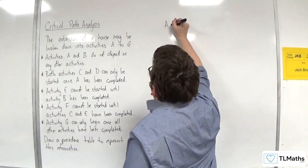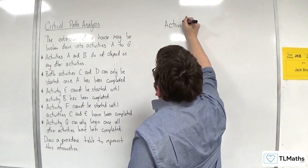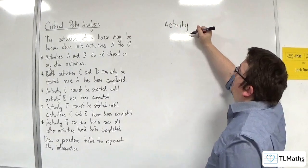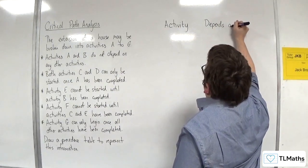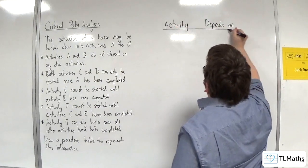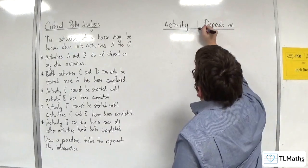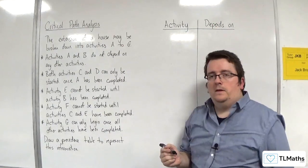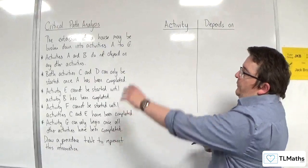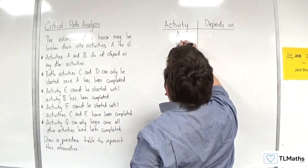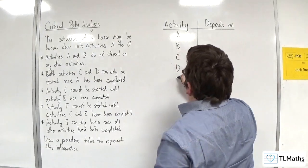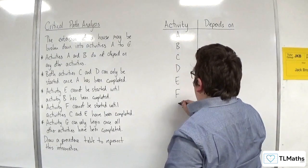So, what we're going to have are two columns. In the first column, left-hand side, we're going to have the activity. And in the right-hand side, we're going to have depends on. So, let's run this down. So, we've got A to G. A, B, C, D, E, F, and G.